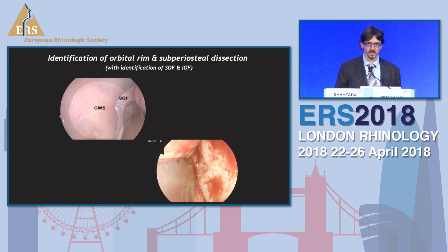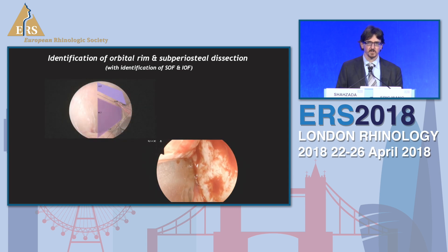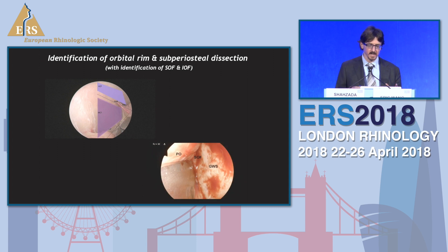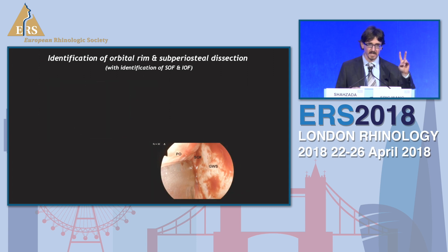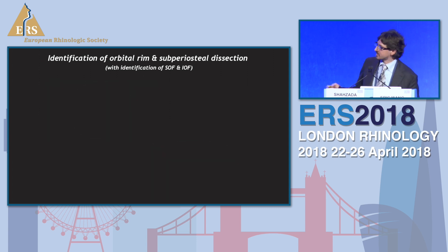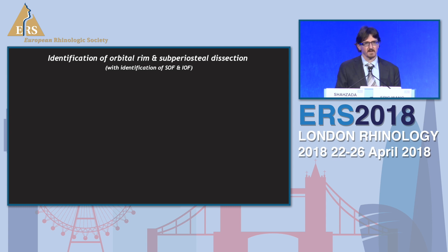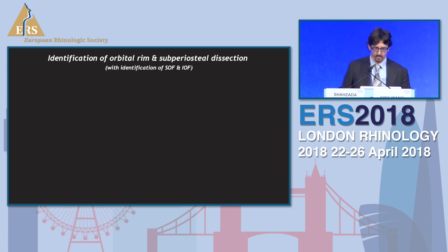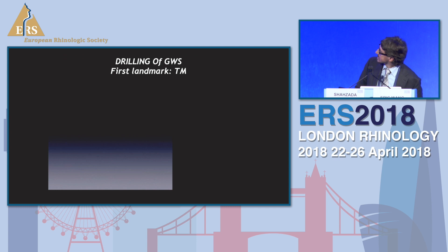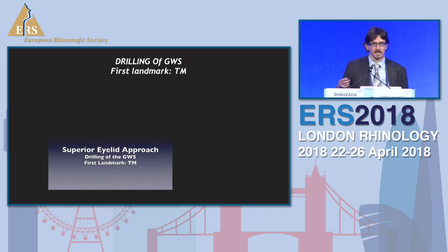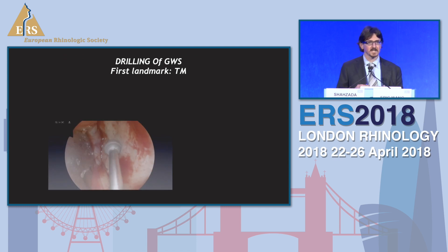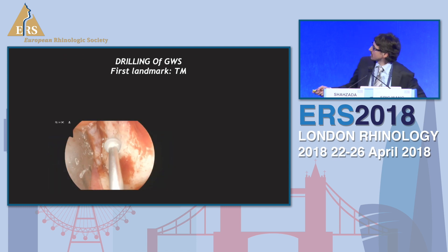The advice is, of course, to spare the periorbita. That means this approach can be considered in at least two parts: one is periorbita-violating and the other is periorbita-sparing. In one case, you can use the orbit as a corridor for deeper areas; in the other, it is an approach to get inside the orbit itself.